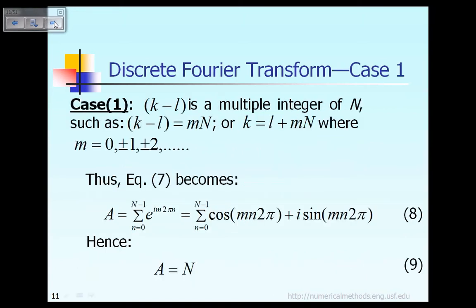Case number one: suppose k minus L is a multiple integer of capital N. By that I mean k minus L equals M times N, where M could be any integer such as 0, plus or minus 1, plus or minus 2. So if k minus L is a multiple integer of capital N, then k minus L is equal to L plus M times N.